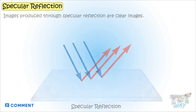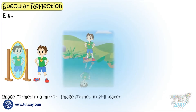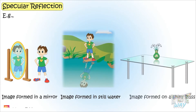Images produced through specular reflection are clear images. Examples include the image formed in a mirror, image formed in still water, and image formed on a shiny glass.